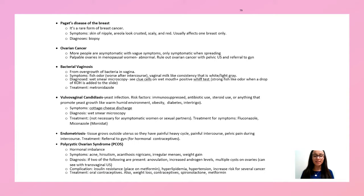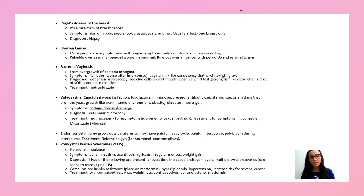Bacterial vaginosis (BV) is from an overgrowth of bacteria in the vagina. The main symptom is a fishy odor with milky discharge — fishy odor is the key clue. It's diagnosed with clue cells on wet mount and a positive whiff test. Positive whiff test, clue cells, and fishy odor — always think BV. Treatment is metronidazole.